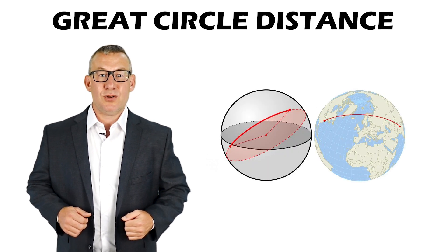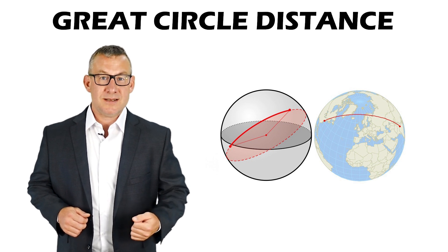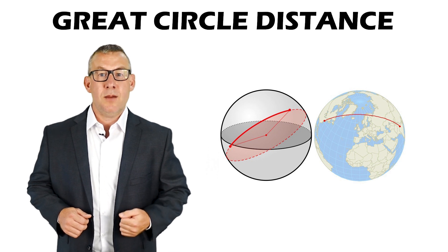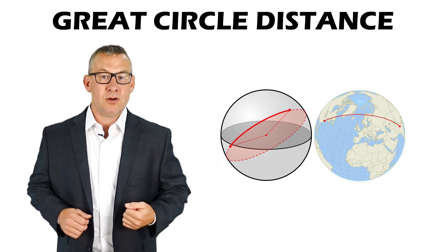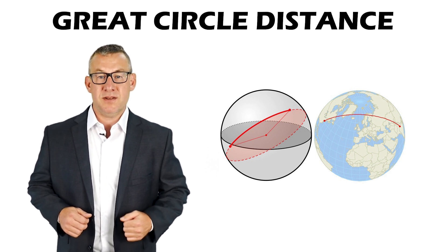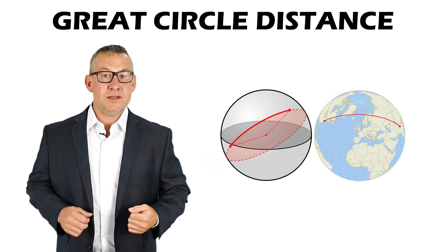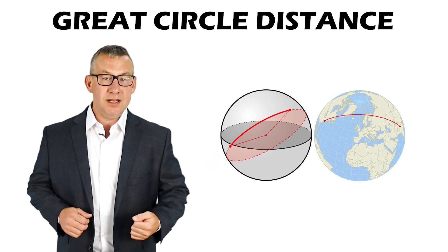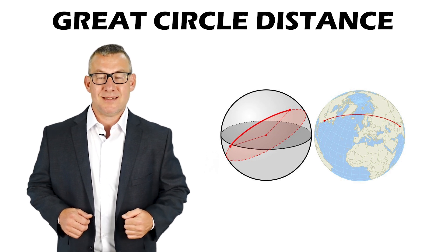The great circle distance is the length of an arc between two points belonging to a circumference passing through the center of a sphere. Great circle distances are used for measuring distances on a 3D Earth's surface.